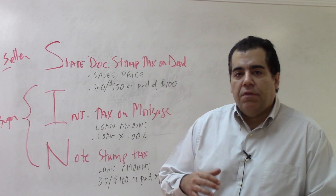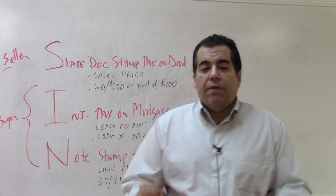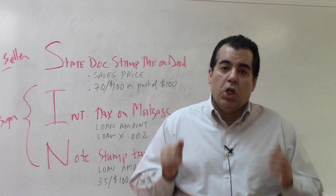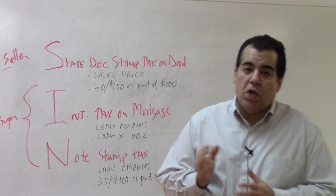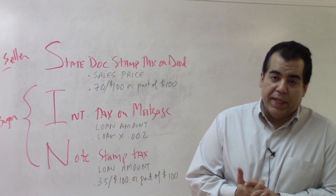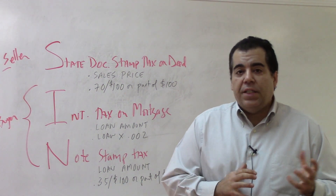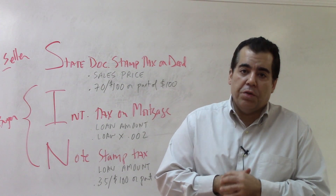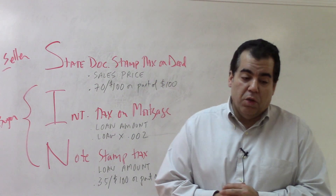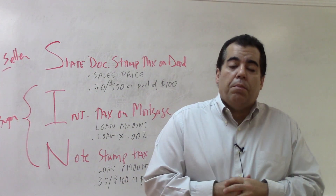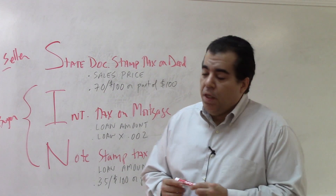In Florida, we have a one-time tax at closing — this is not your yearly property taxes. We have a tax on the document called the deed, which transfers ownership of the property. We have a tax on the document called the mortgage, which gives the lender the right to go after your property if you default. And we have a one-time tax on the document called the promissory note, which personally obligates you to repay the debt.